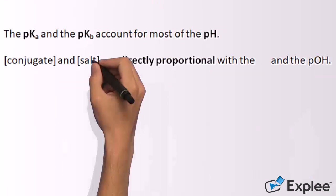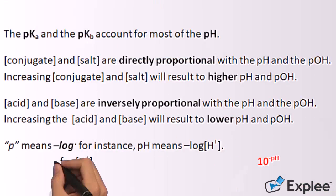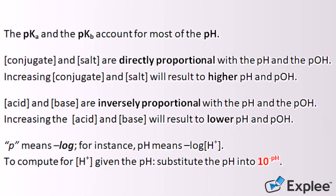The pKa and the pKb account for most of the pH. The concentration of the conjugate acid or base and the concentration of the salt are directly proportional with the pH and the pOH. This means that increasing the concentration of the conjugate and the salt will result to higher pH and pOH. The concentration of the acid and the concentration of the base are inversely proportional with the pH and the pOH. So increasing the concentration of the acid and the concentration of the base will result to lower pH and pOH.